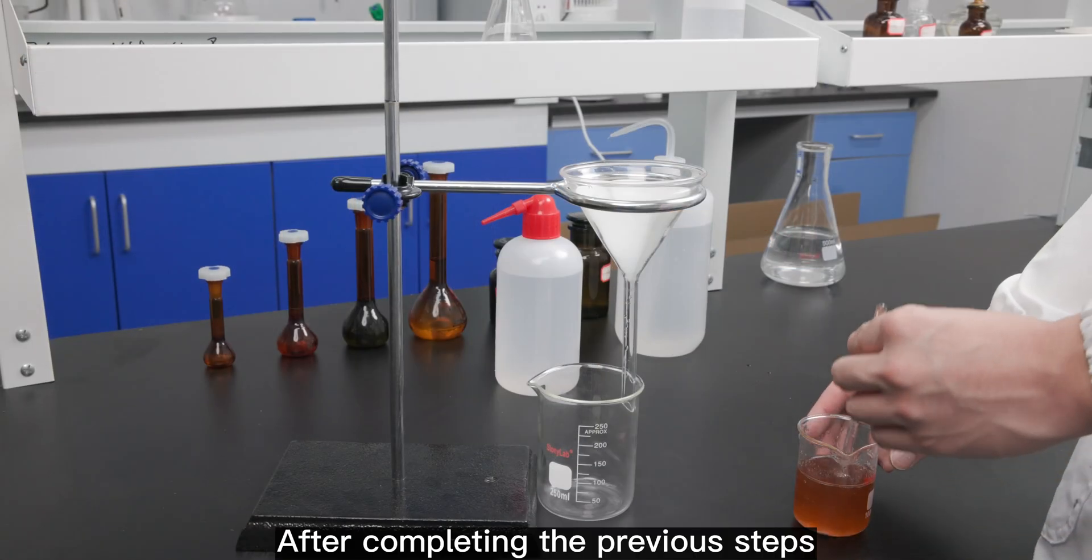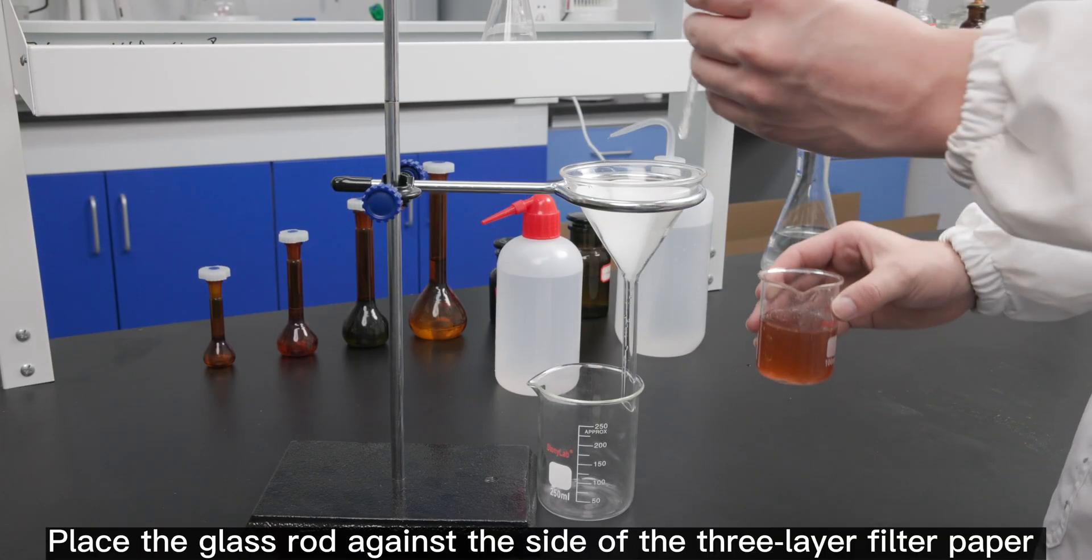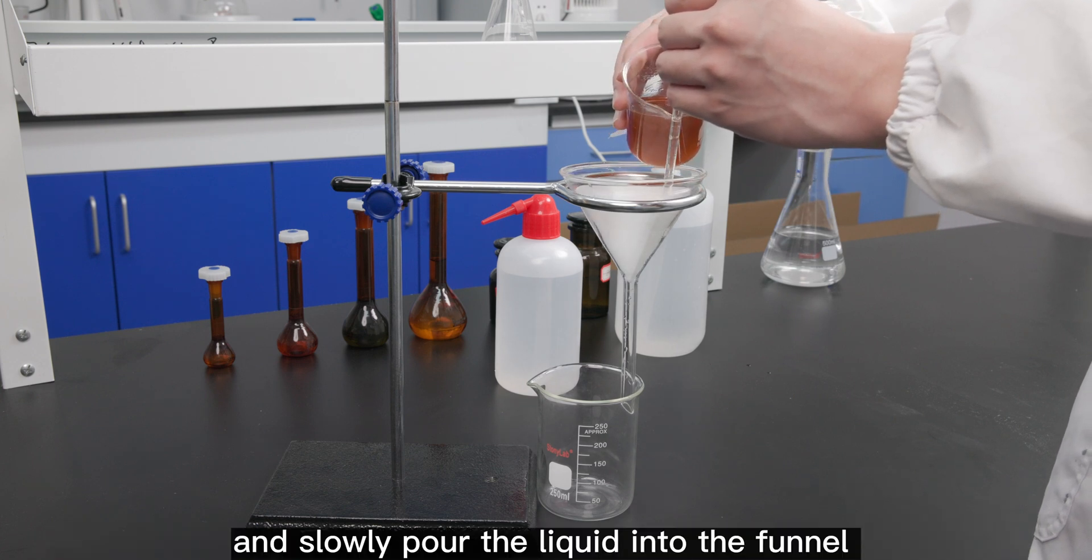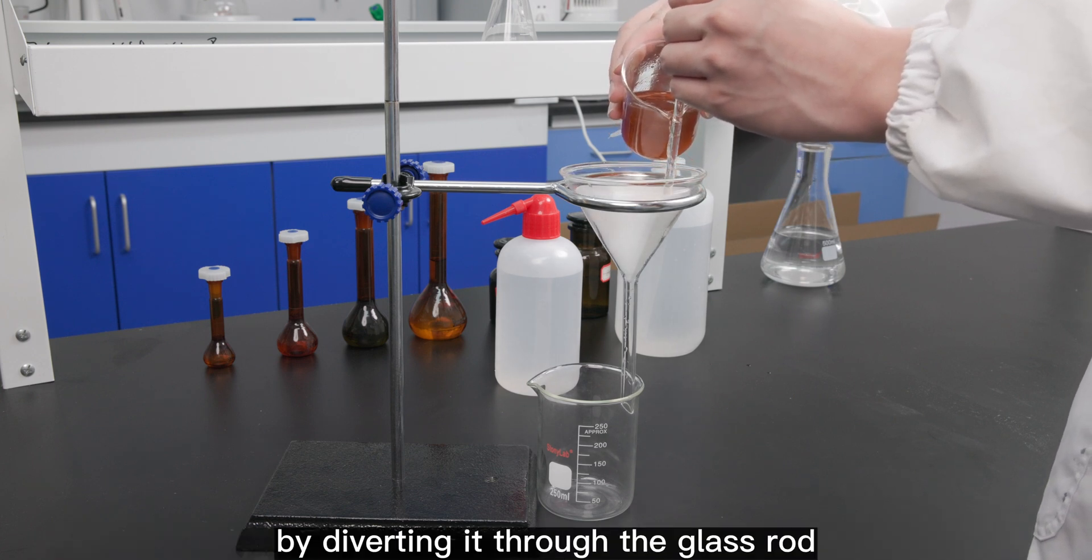After completing the previous steps, place the glass rod against the side of the 3 layer filter paper, and slowly pour the liquid into the funnel by diverting it through the glass rod.